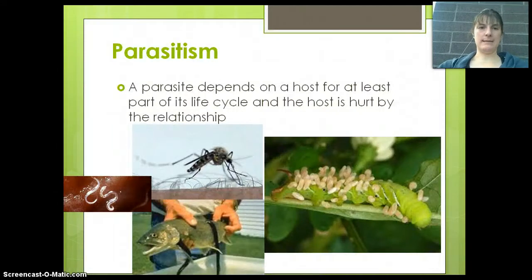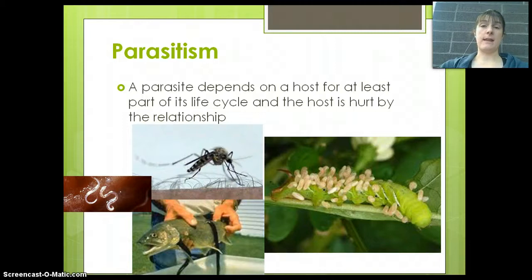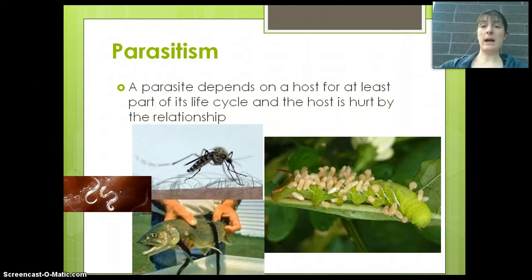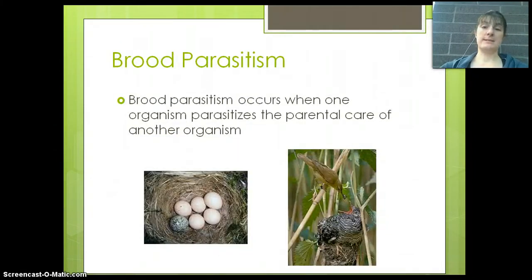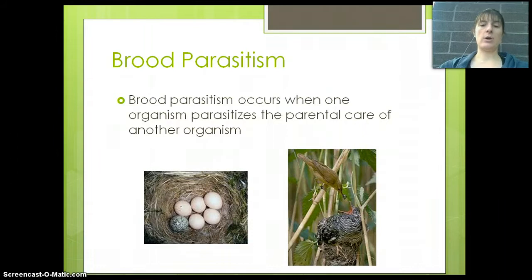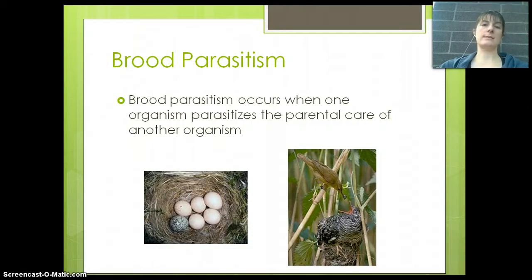First we need to remember what parasitism is. Parasitism is the process of a parasite depending on a host for at least part of its life cycle. The host is hurt by this relationship — one is helped and one is hurt. Brood parasitism still has that interaction where one is hurt and one is helped, but brood parasitism occurs specifically with parental care. It's defined as the process of one organism parasitizing the parental care of another organism.